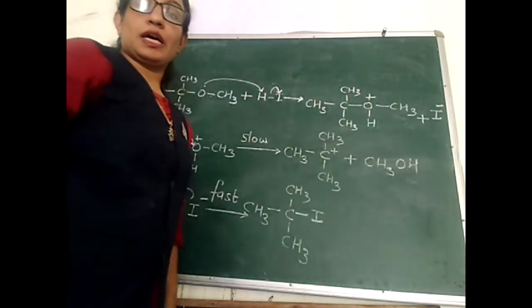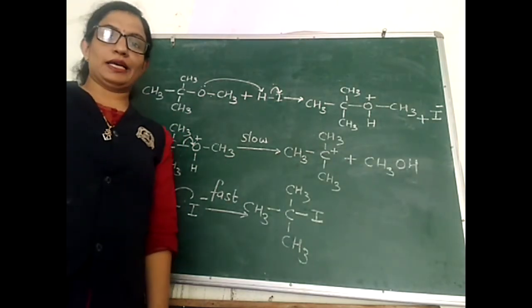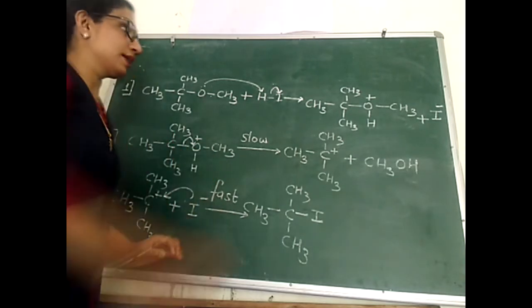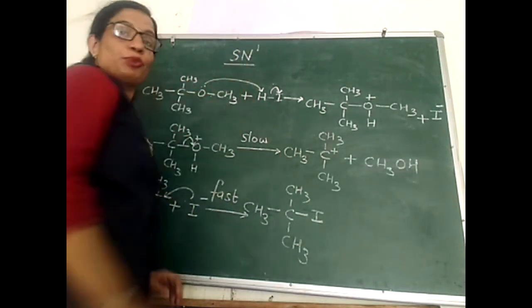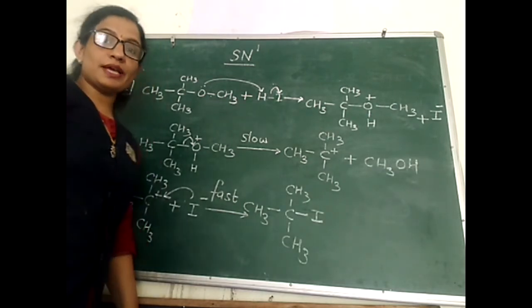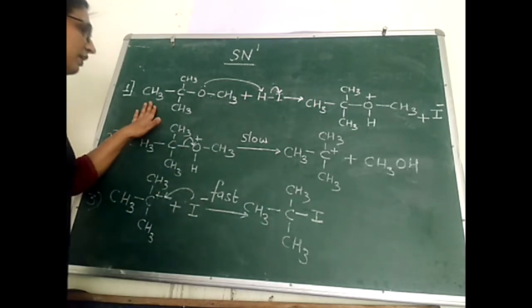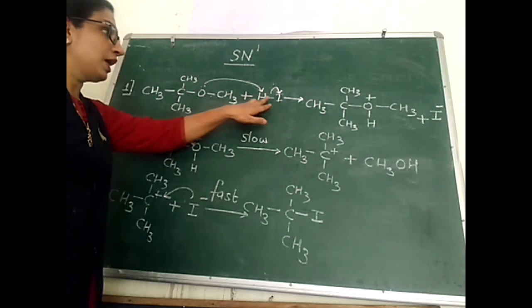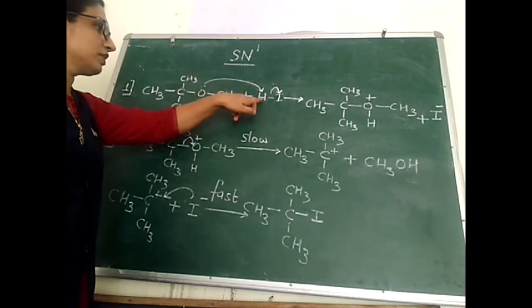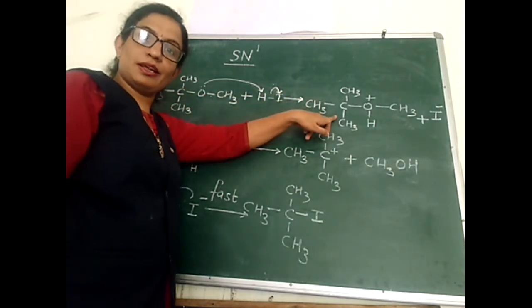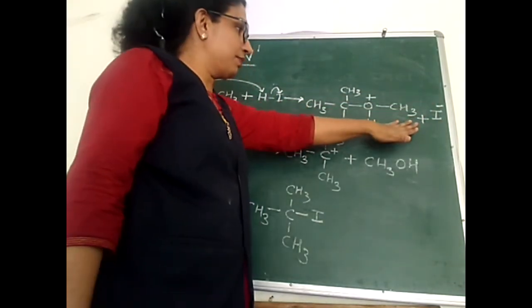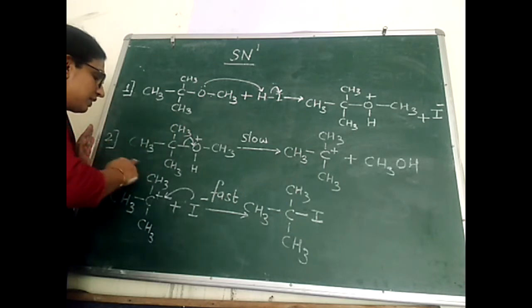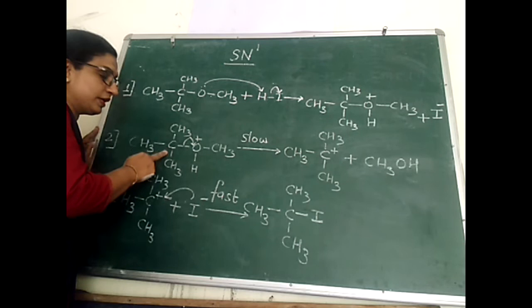When one of the alkyl groups attached to the ether is a tertiary alkyl group, then the reaction of that ether with hydrogen halide follows the SN1 mechanism — nucleophilic substitution unimolecular reaction. The first step is exactly the same: a molecule of ether reacts with hydrogen iodide, electrons of the H-X bond shift towards halogen, hydrogen becomes electron deficient, and oxygen of ether attacks this electron deficient hydrogen. A protonated ether is formed along with release of halide ion. In this protonated ether, one of the alkyl groups is a tertiary alkyl group — here it is a tertiary butyl group.